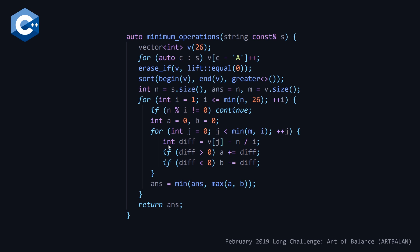After the inner loop, we update answer to be the minimum of the current answer and the maximum of a and b. Note you could convert this inner loop into two calls to accumulate with lambdas, but I found that made the code less readable, so I left it as-is. Once the nested for loop finishes, we return our answer.